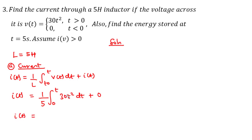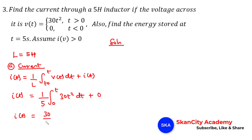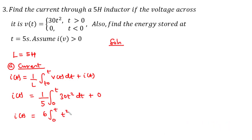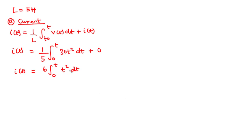Since 30 is a constant we pull it out, giving us 30 over 5, which equals 6. So we have 6 on the outside times the integral from 0 to t of t² dt. We integrate t², increasing the exponent by 1 and dividing by the new exponent, giving us t³ over 3, evaluated from 0 to t.